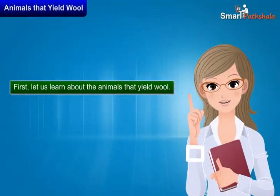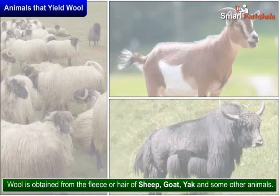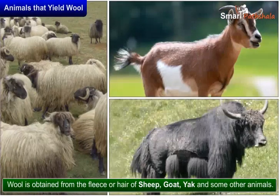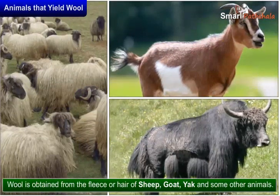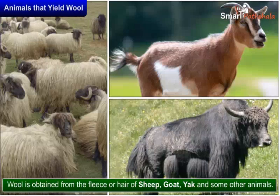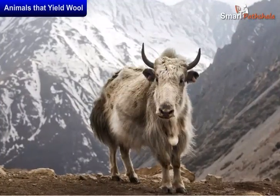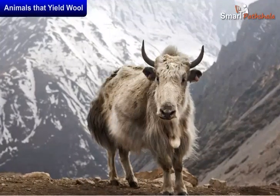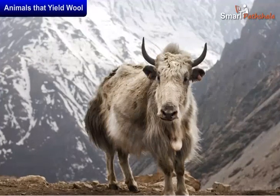First, let us learn about the animals that yield wool. Wool is obtained from the fleece or hair of sheep, goat, yak and some other animals. These animals bear hair on their body. Hair traps a lot of air. As we all know that air is a poor conductor of heat, hair keeps these animals warm. Wool is derived from these hairy fibres.